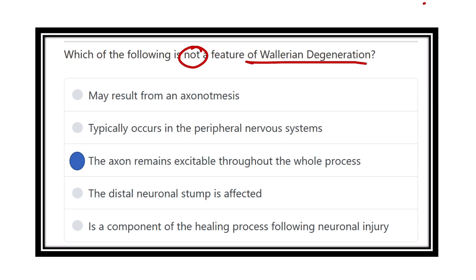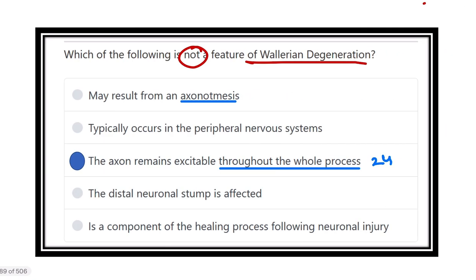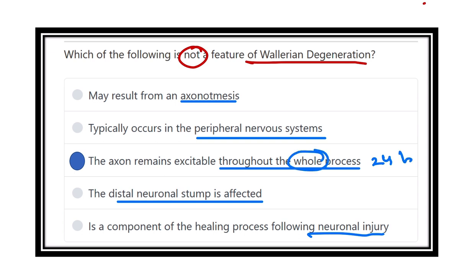So what is NOT a feature of Wallerian degeneration? The axon remains excitable — but not throughout the whole process. It is only excitable for 24 to 48 hours after initial injury. Wallerian degeneration may result from axonotmesis — yes, that is true. Only neuropraxia is spared from Wallerian degeneration; both axonotmesis and neurotmesis do involve it. Typically occurs in peripheral nervous system — true. Distal nervous system is affected — true. It is a component of the healing process — also true. Therefore, the false option is that the axon remains excitable throughout the whole process; it is only excitable for the first 24 hours.